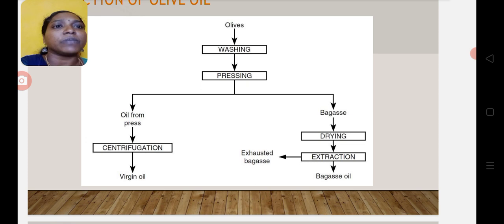Then it goes to pressing. From pressing, we get oil and also bagasse, which is waste material after oil extraction. It goes to the drying process and also to extraction.